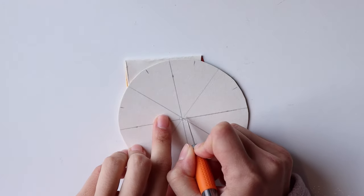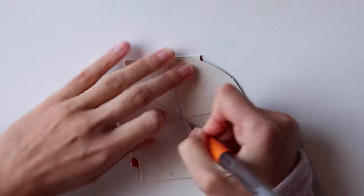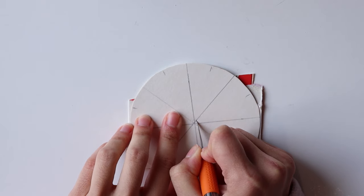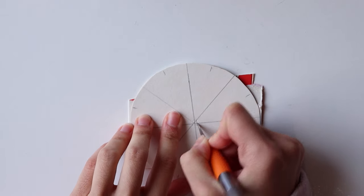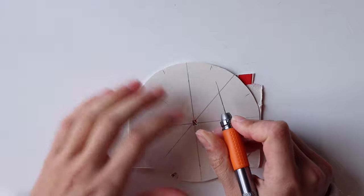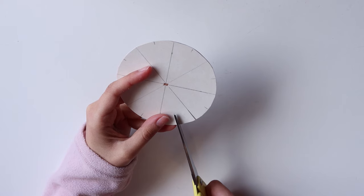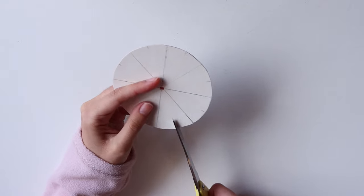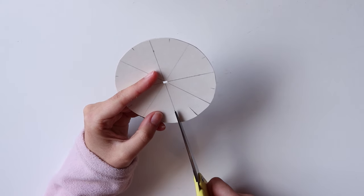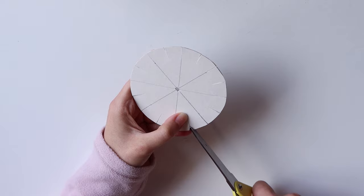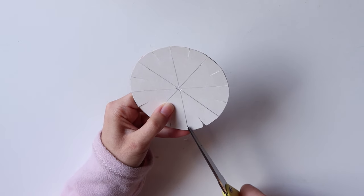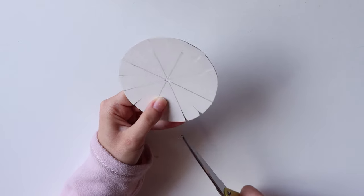Cut the center of the circle with an exacto knife. I did mine just big enough to put the strings through. Then cut the slits. And if you want, cutting the edges at an angle will help placing the cords inside.